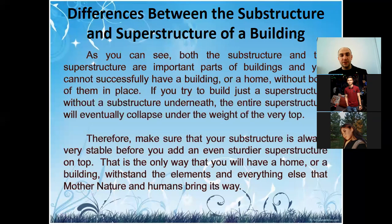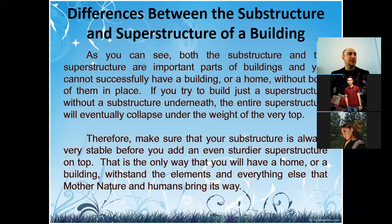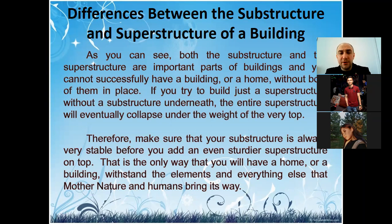The substructure includes foundations, piers, and abutments in various configurations. In buildings it includes the foundation; in structures like bridges it includes piers and abutments. The superstructure then covers the internal and external elements of the building above the substructure. External walls protect the building from the outside — from cold temperatures, climate, and so on. Internal partitions and walls divide the interior into rooms and create flats in residential buildings.